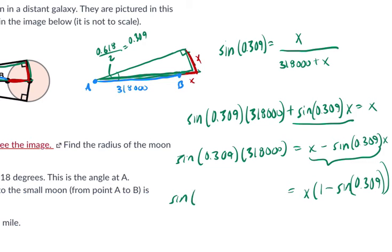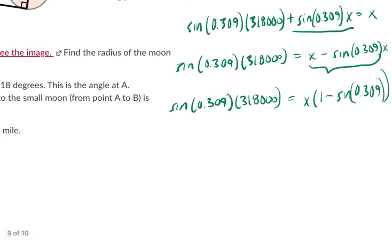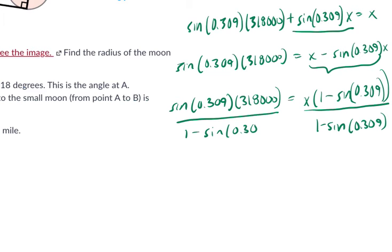And all we have to do now, rewriting our terms, is isolate x. Get it all by itself. How do we do that? We divide off of this term. Right? We divide it by 1 minus the sine of 0.309. And these are going to cancel. And that's the value of x.